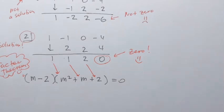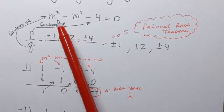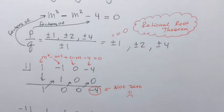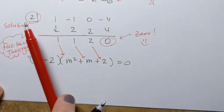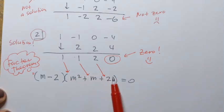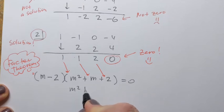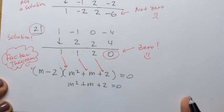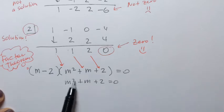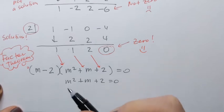The degree of the equation corresponds to the number of roots. Since it's degree 3, we expect 3 solutions. We've already found one: m = 2. How do we find the remaining 2? Good news is that the other factor we obtained is a quadratic factor, so we can simply set it equal to 0 and solve using the quadratic formula. If we could factor it, we would, but we'll use the quadratic formula.